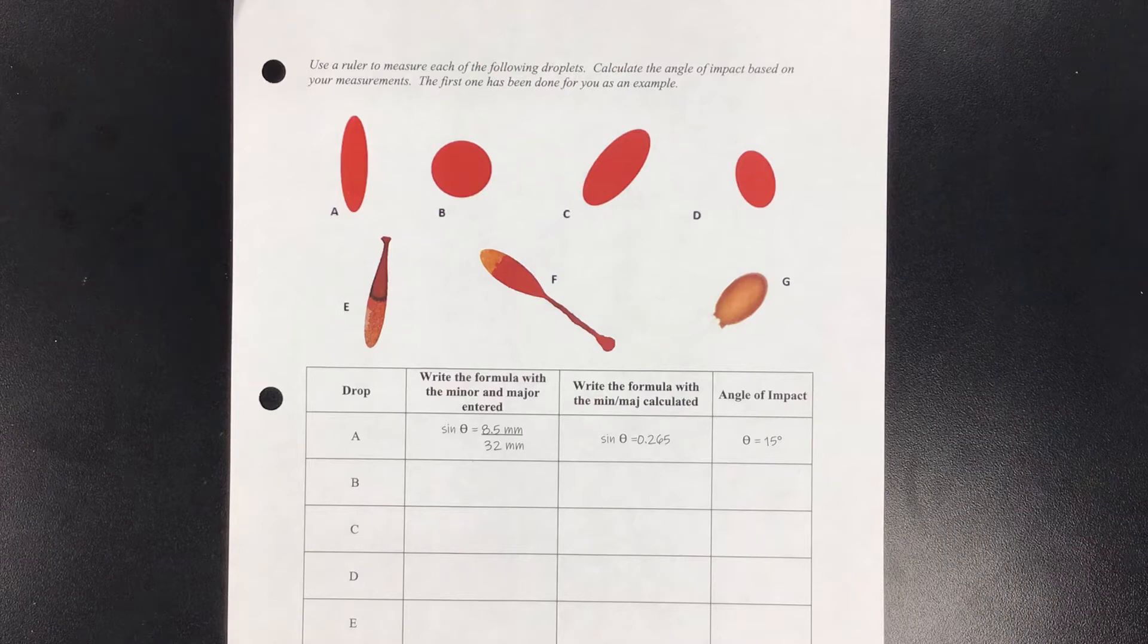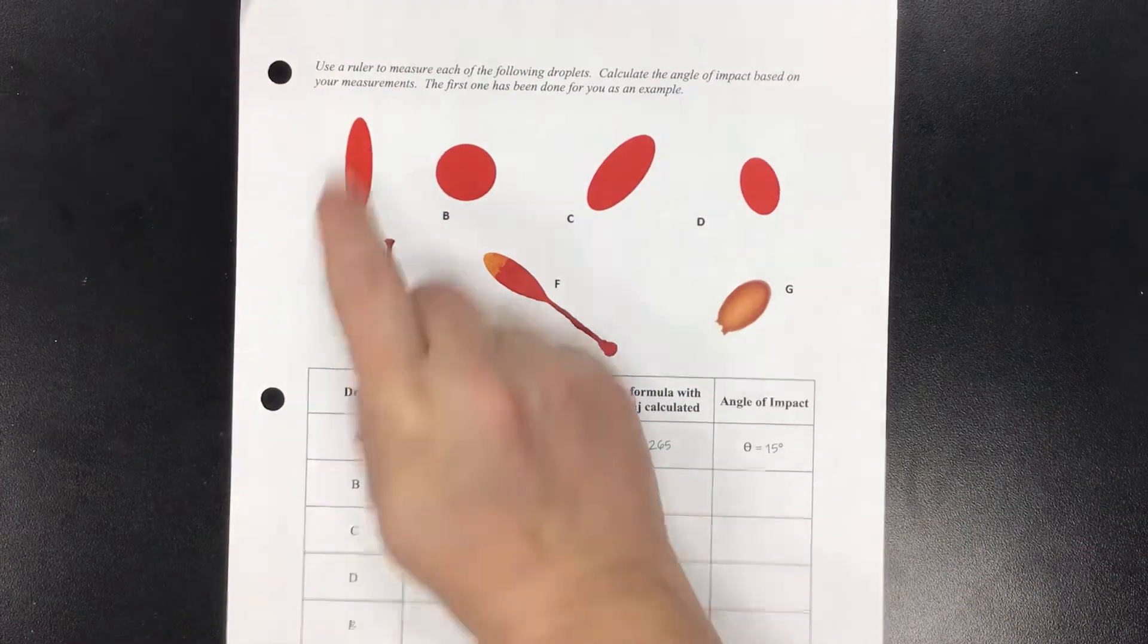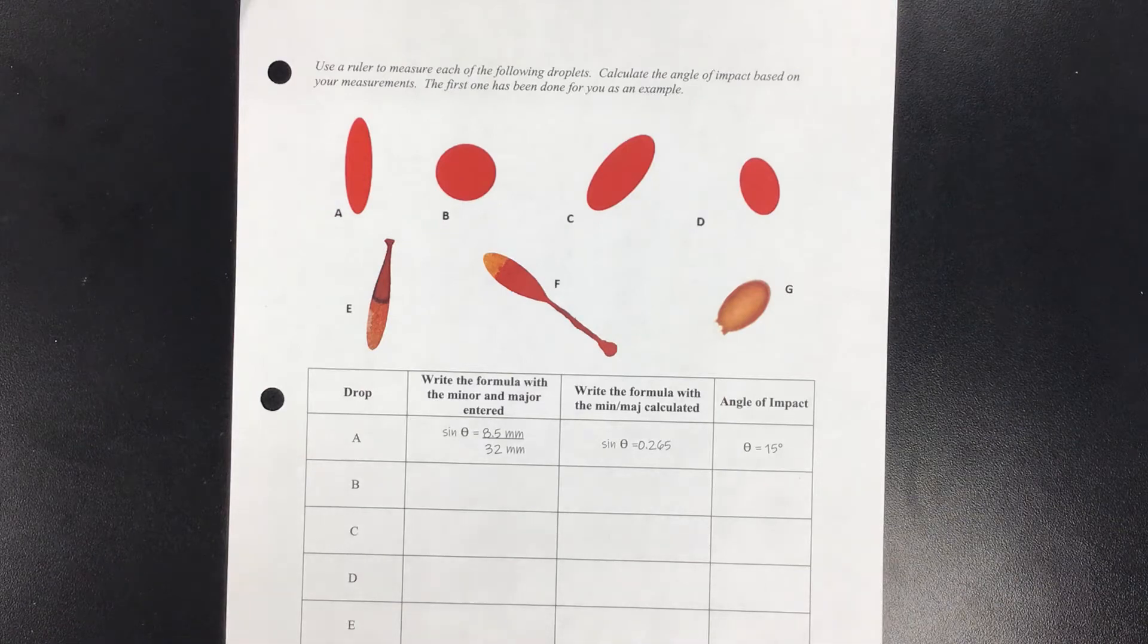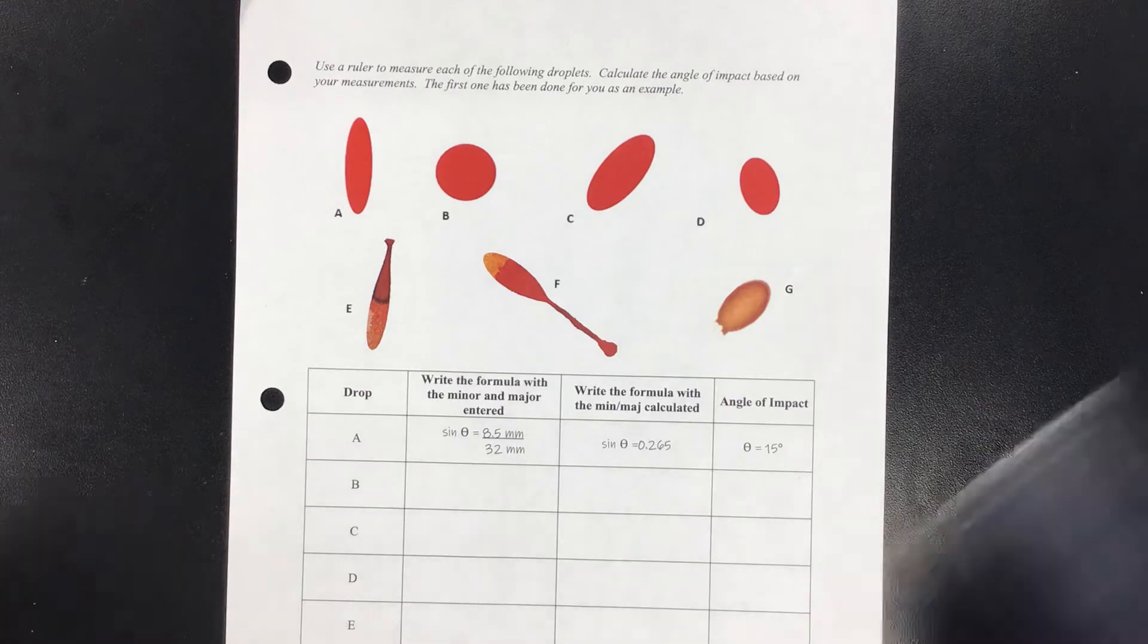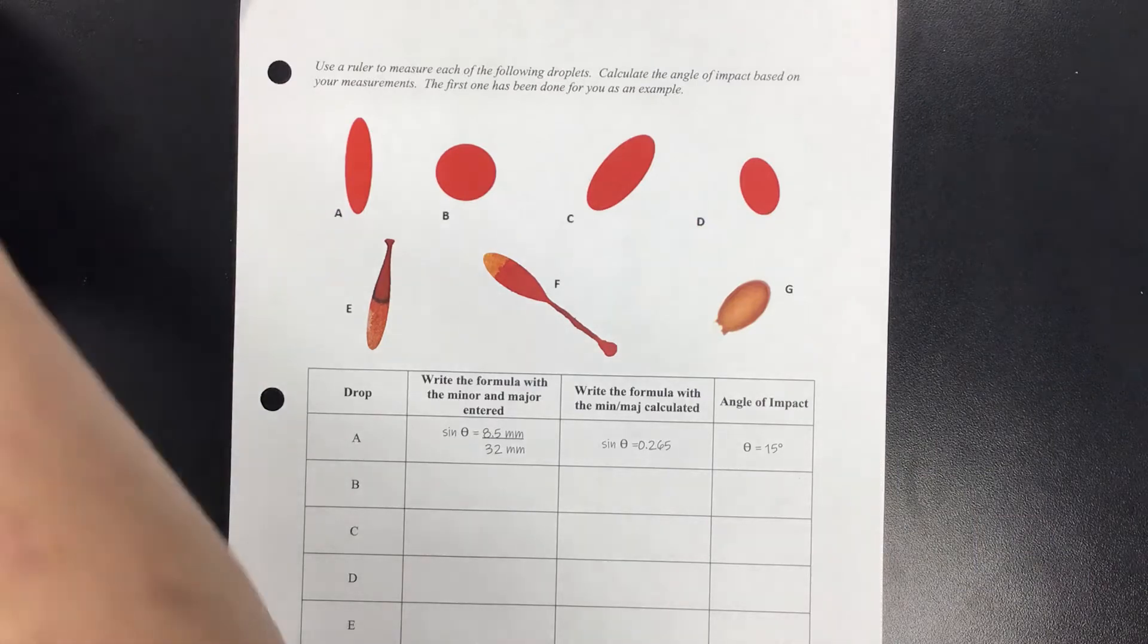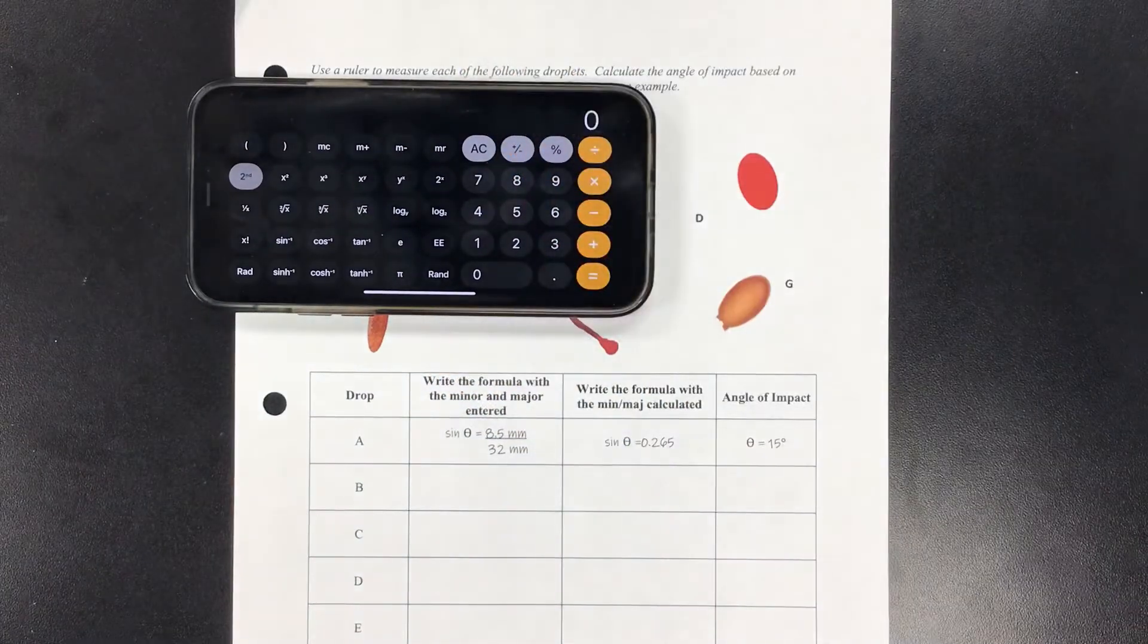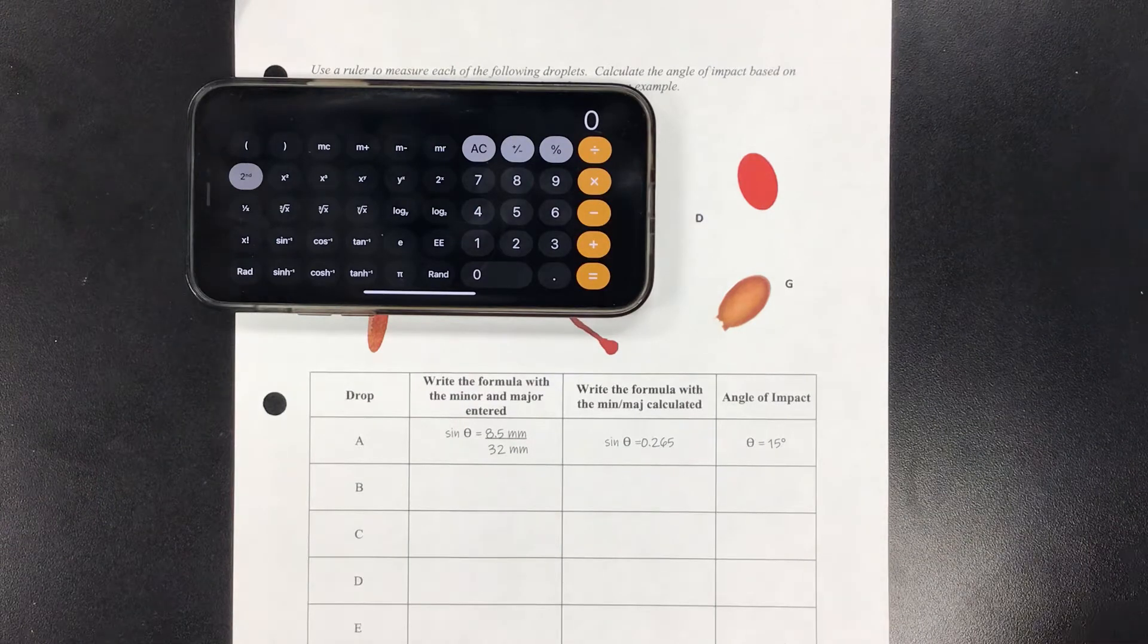So we're going to start with blood droplet A right here and we're going to start by taking a measurement. We want to find the minor - that's what our first step does. Well, our first step says we're going to make sure that our calculator is in degrees and not radians.